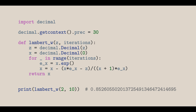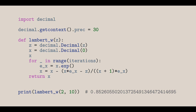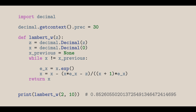Otherwise, we can store the previous value and check if it's different to the current value. Once they are the same, the value would not have changed and fully converged with the precision we've set. This method will require more memory because we will be storing both the current and previous value. We can define the previous x to be none, and change the loop to while x is not equal to the previous x. Finally, update the previous x to be x.